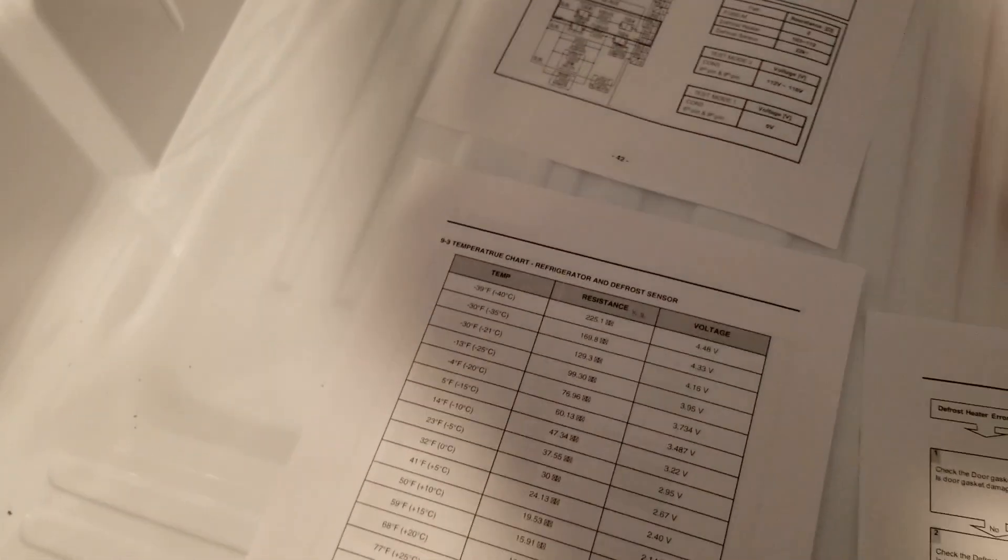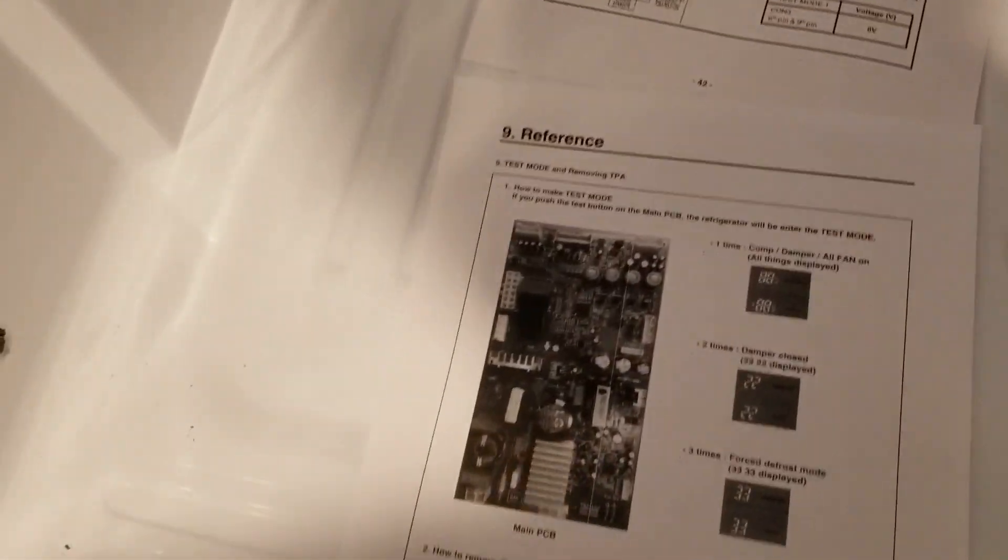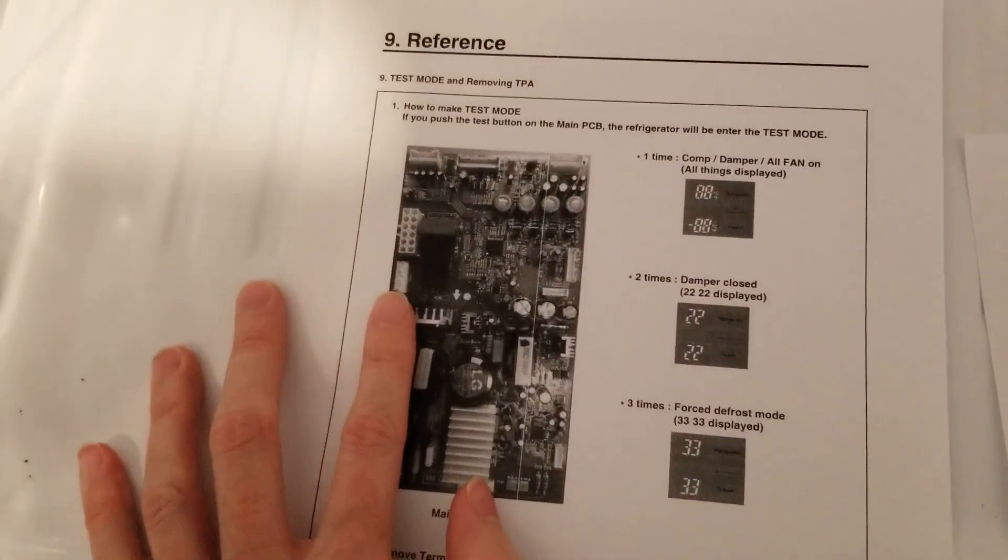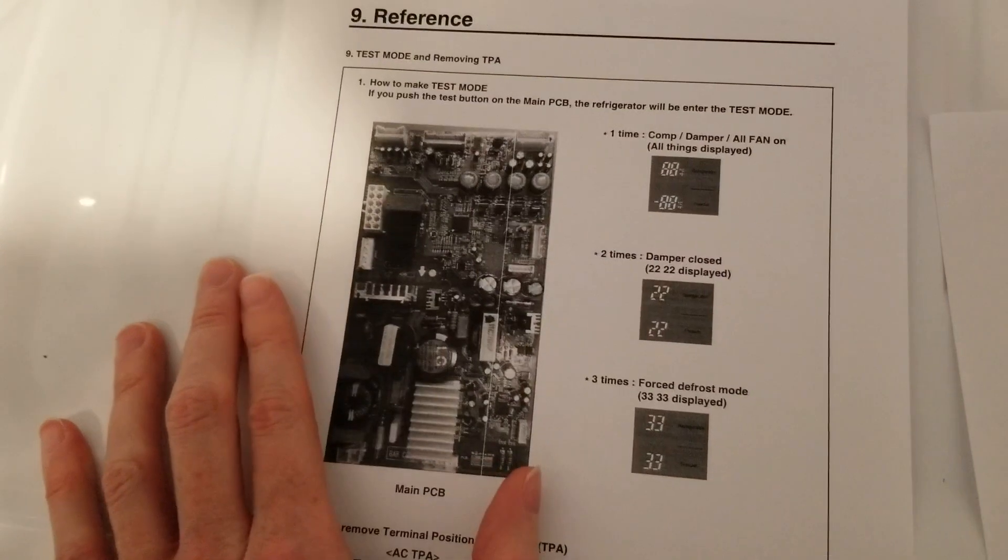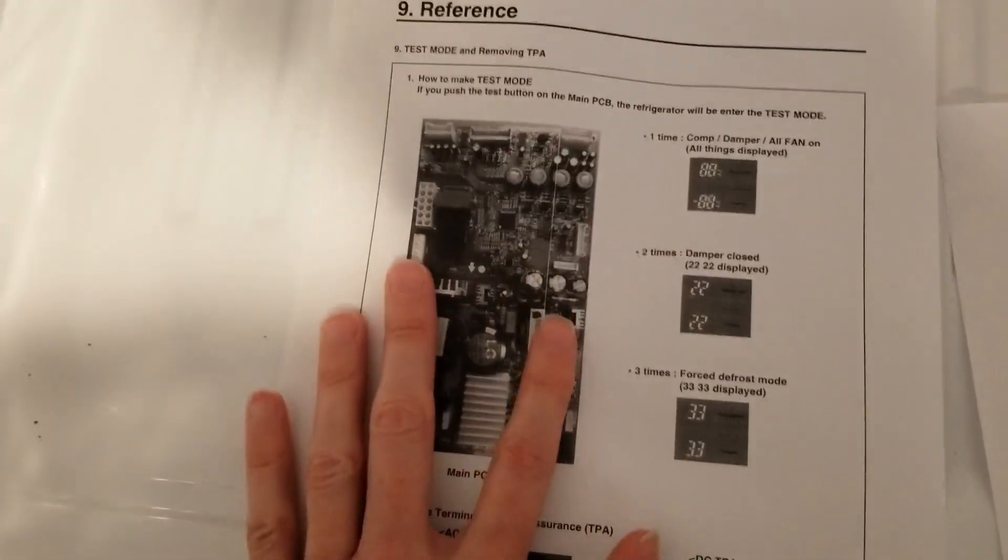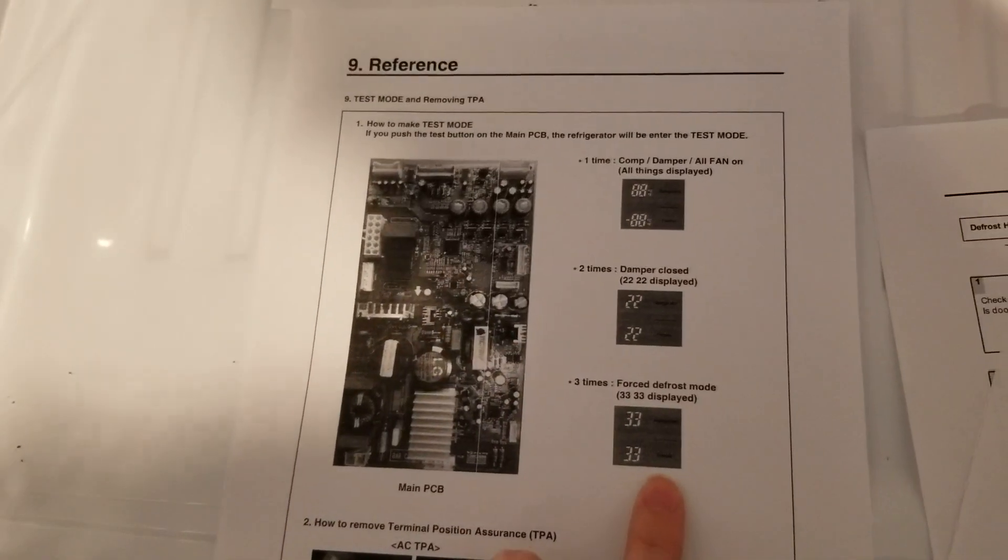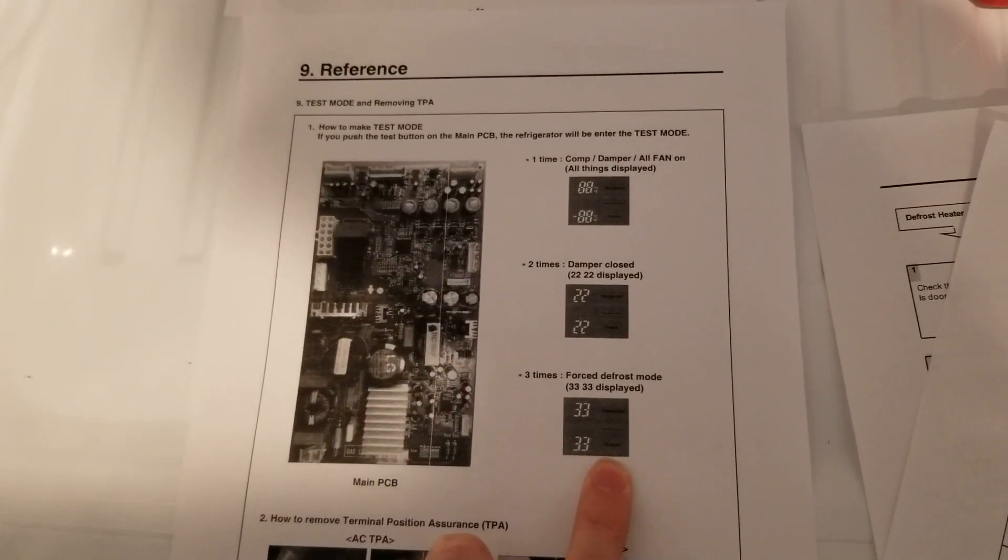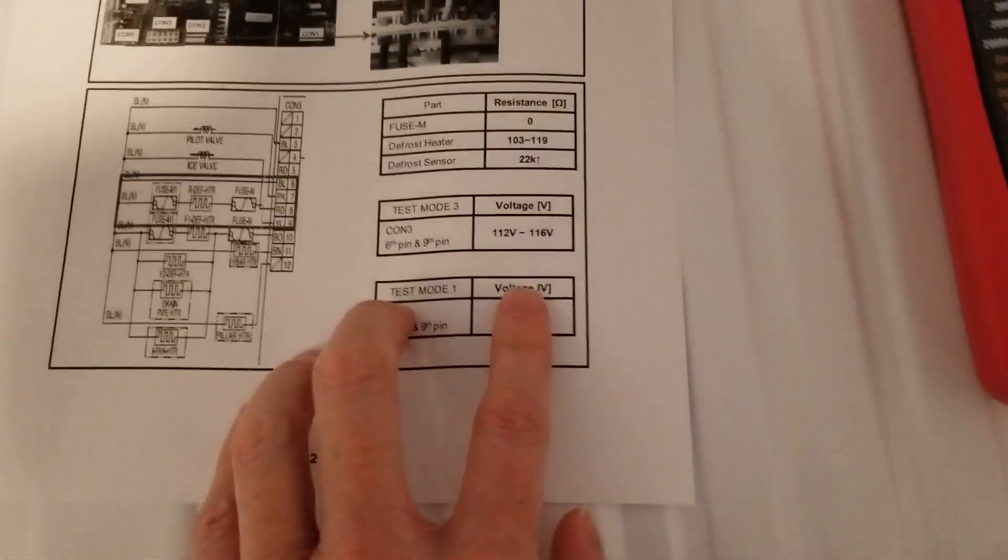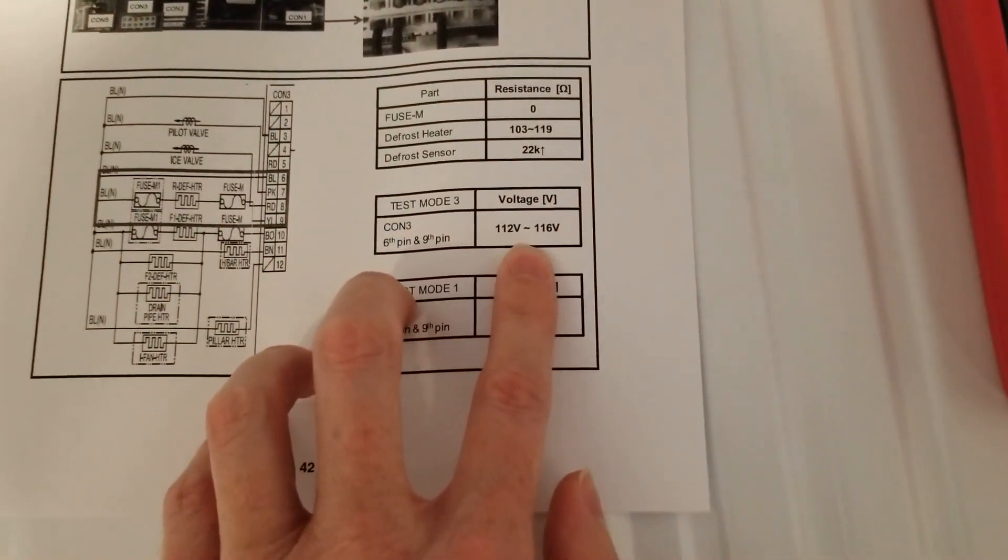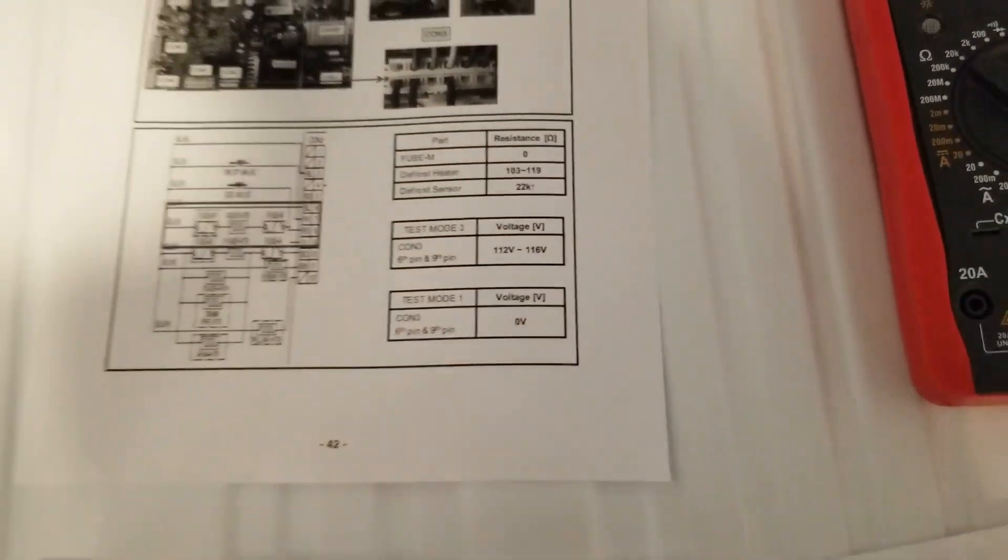If you have the same issue, the repair manual goes on to talk about test mode three. If you go in the back of the fridge and disassemble the back, you'll see this control board. There'll be a button on it. You'll press it three times and it will go into forced defrost. You should see 112 to 116 volts go to the heater. If not, then the control board's busted.